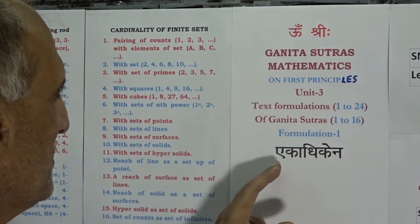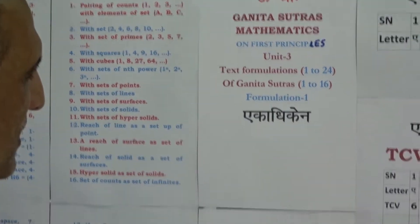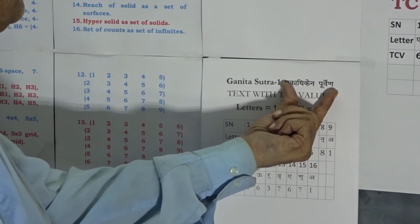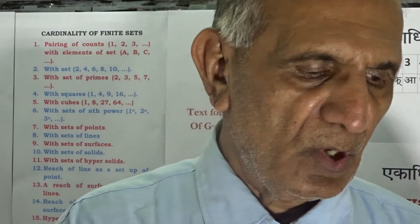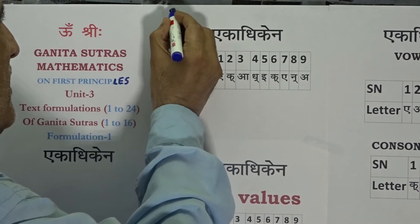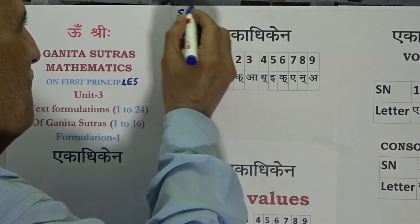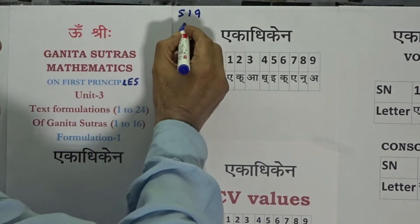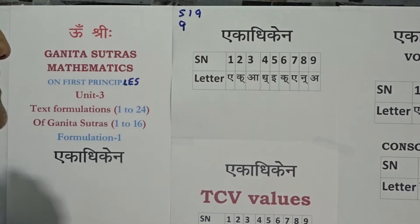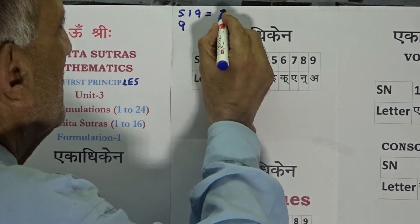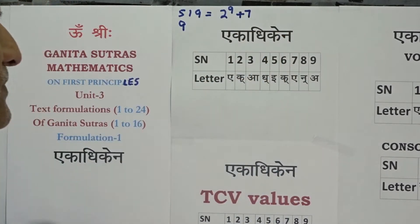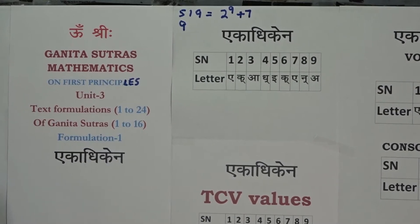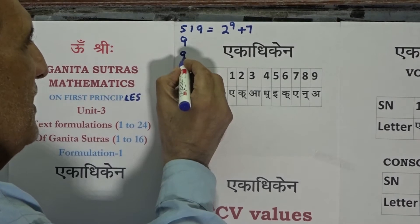The first formulation is Eka Adhiken and the second formulation is Purven. This pair of formulations, Eka Adhiken Purven, makes a complete text of Ganita Sutra 1. The Ganita Sutras together with Ganita Upsutras make a total range of 519 letters, of which Eka Adhiken Purven is a scripture of just 9 letters. We know that value 519 is a value accepting organization: 2 raised to power 9 plus 7.